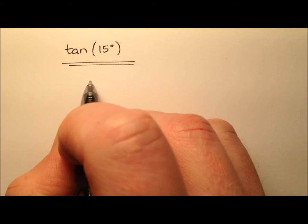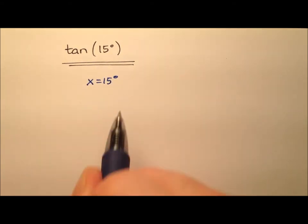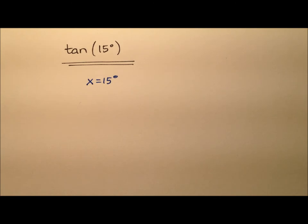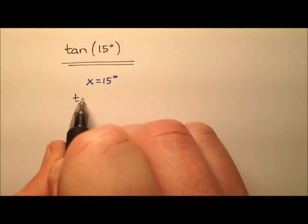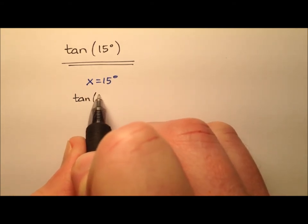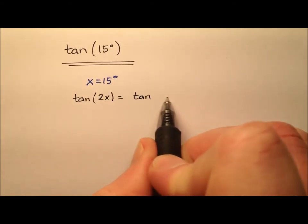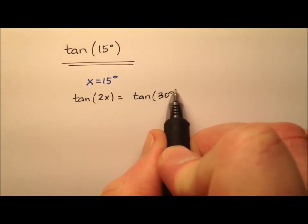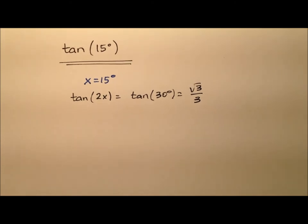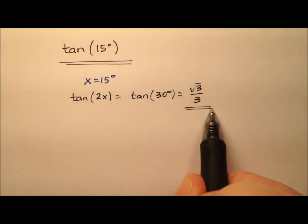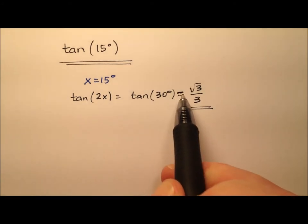Let's start with the first method by saying x equals 15 degrees. So that means I'll be able to write a nice equation here that says the tangent of twice x will ultimately be double of 15 degrees, so 30 degrees, which is the square root of 3 over 3. So this is a value we know from before because it's tangent of 30 degrees — very standard.